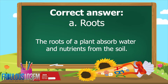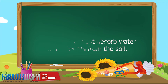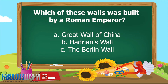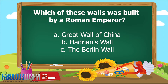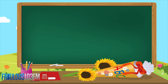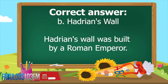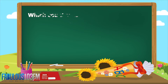The roots of a plant absorb water and nutrients from the soil. The second question yesterday: which of these walls was built by a Roman emperor? A, the Great Wall of China; B, Hadrian's Wall; or C, the Berlin Wall. The correct answer is B, Hadrian's Wall, which was built by a Roman emperor.